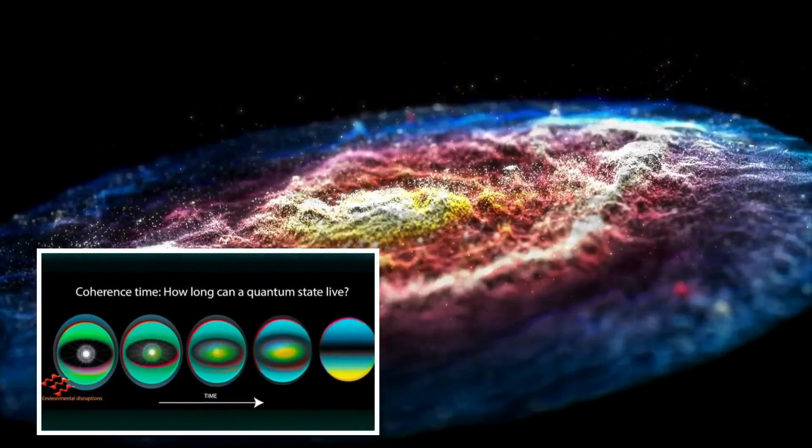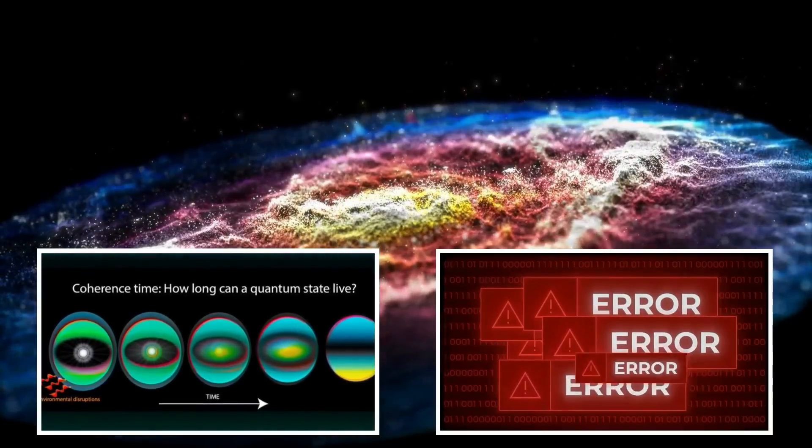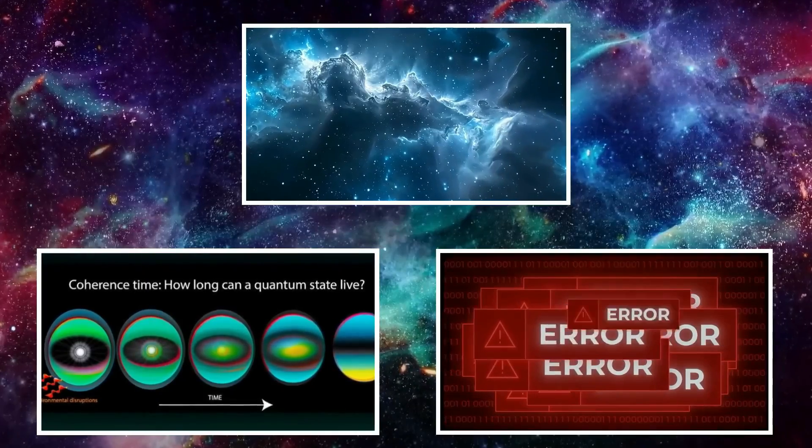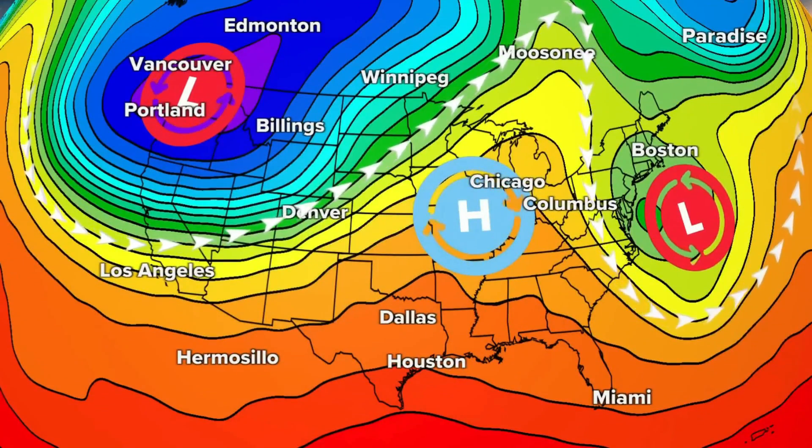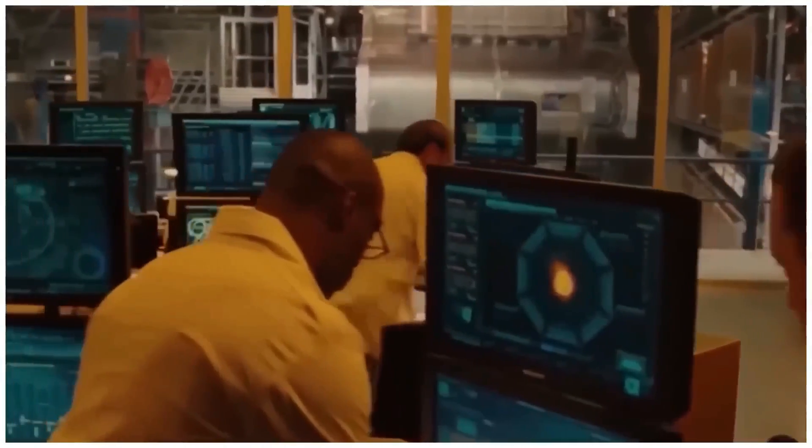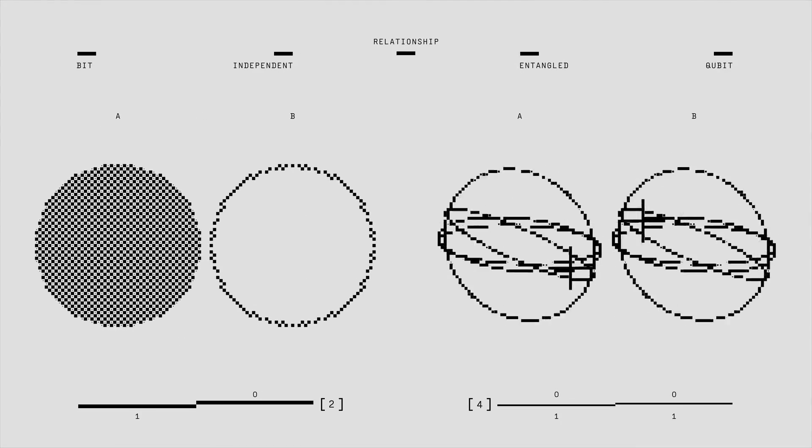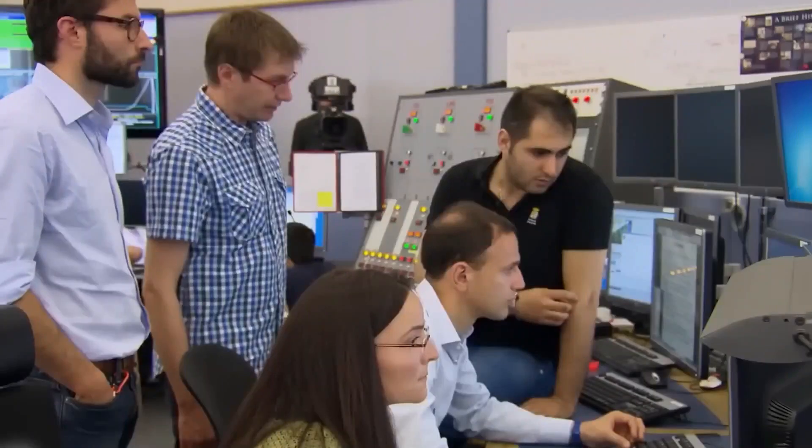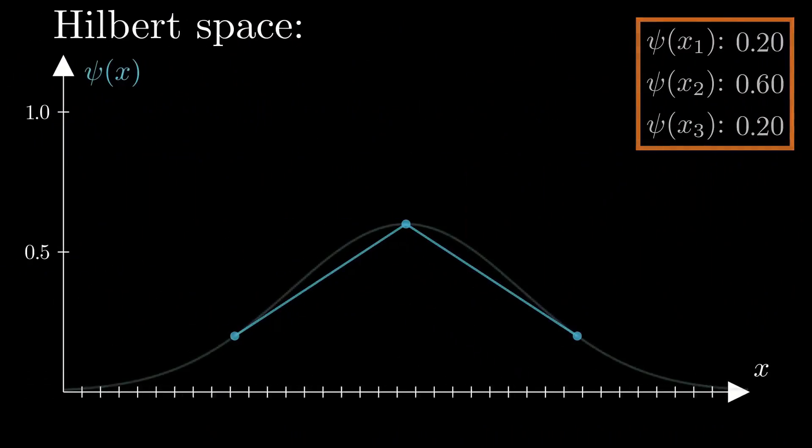Yet, even they face limits. Decoherence, randomness, error correction. Until the Omega Pattern emerged. Like Gödel's forbidden constant, it slipped through the cracks, manifesting physically in the readouts of entangled qubits. Researchers soon realized, Omega wasn't just poetic naming. It was the Omega.